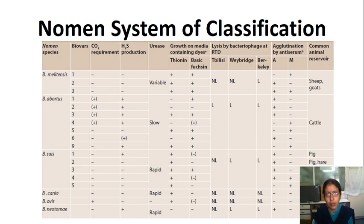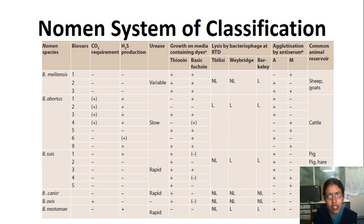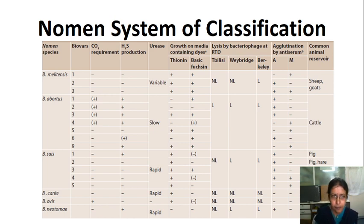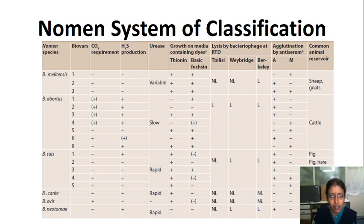Regarding urease production: melitensis shows variable urease production, whereas abortus are slow urease-producing organisms. These six species of Brucella are also classified based on carbon dioxide requirement, hydrogen sulfide production, urease, tolerance to bacteriostatic dyes, and agglutination by monospecific antiserum with predominantly A or M antigen on the lipopolysaccharides. This classification is kept under the Nomen system of classification.